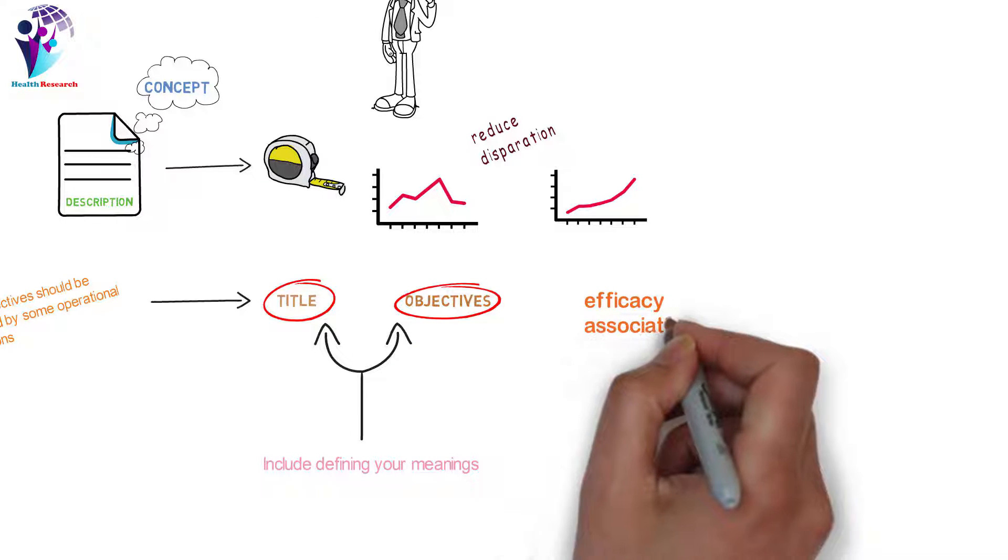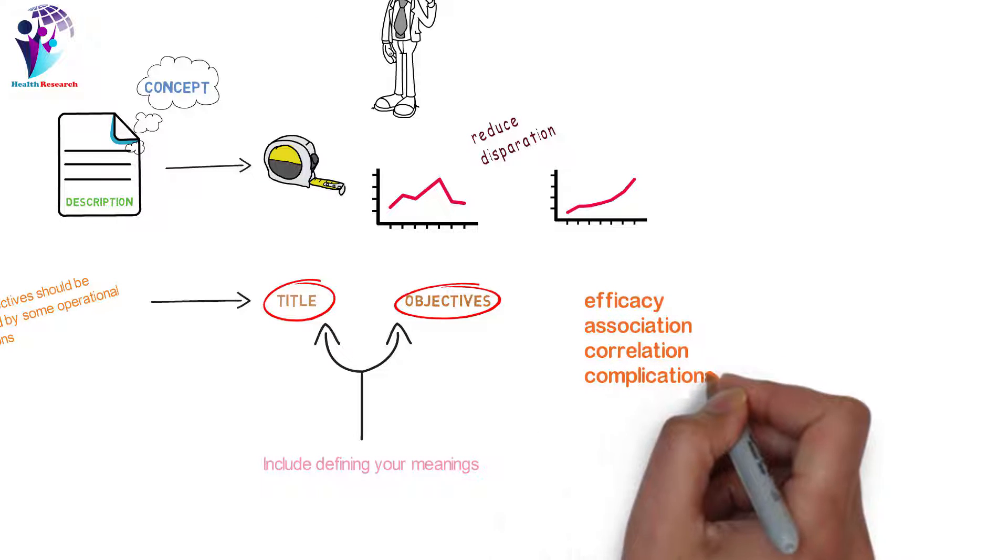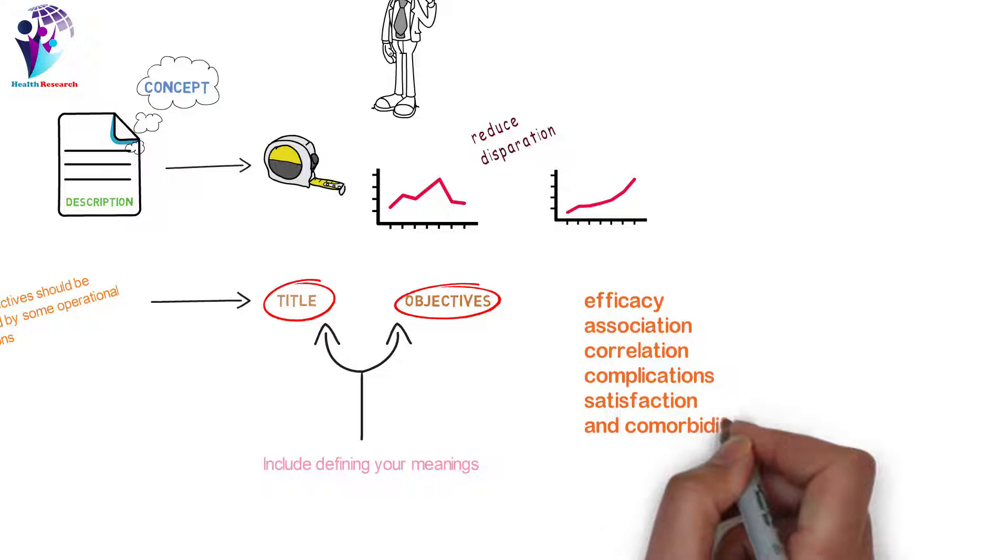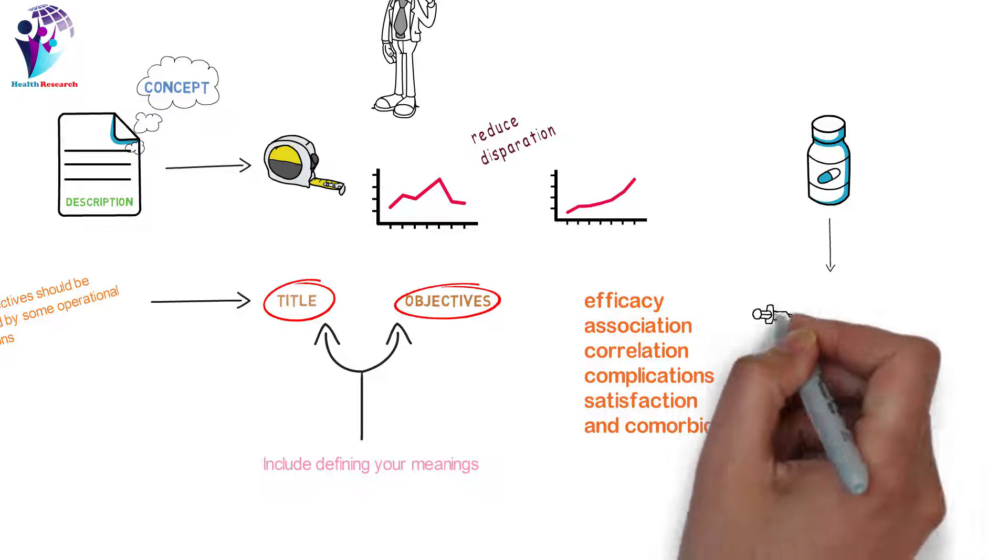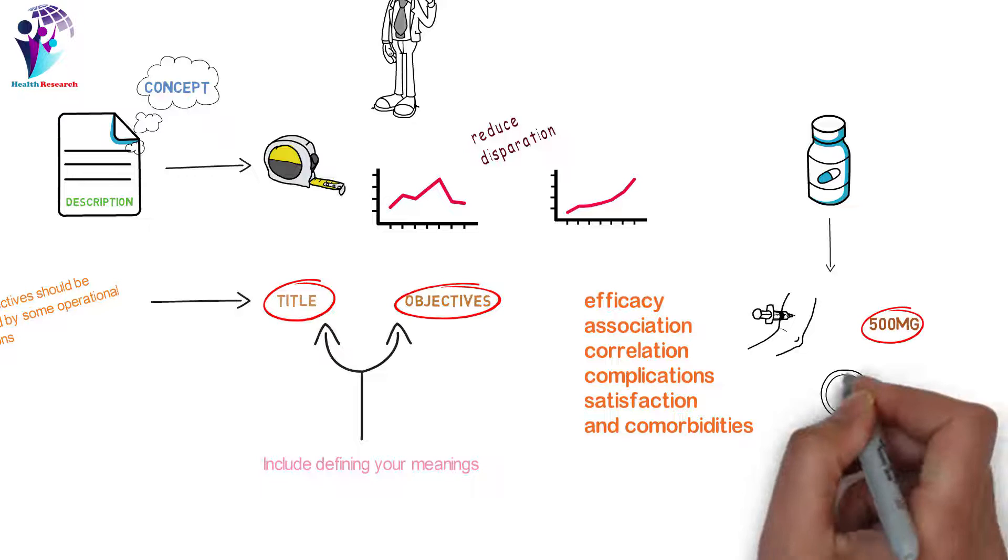Terms like efficacy, association, correlation, complications, satisfaction, and comorbidities may need to be defined. If drugs are to be used, their route, dose, and duration should be listed.